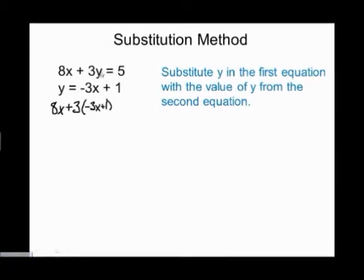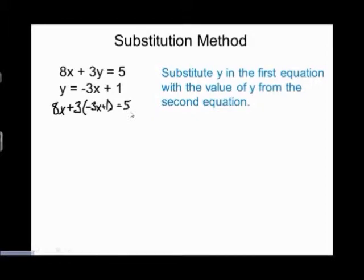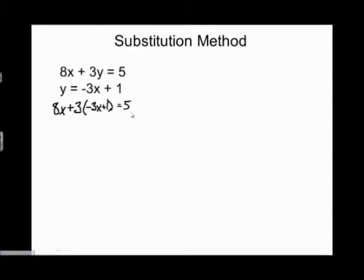I've removed y and replaced it with what y equals, and since they're equal, that's fine — I haven't changed anything, just the way it looks. The 5 stays the same on the other side. What's happened is that whereas both original equations had two variables, x and y, after the substitution I only have one variable. That's the whole idea of systems of equations: how do you go from two variables to eliminating one, so you're left with just one letter, and then you can use algebra to solve.